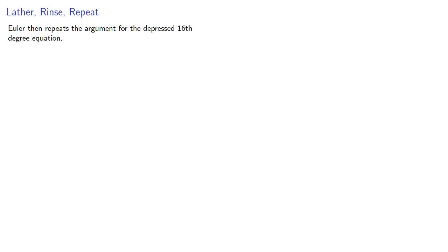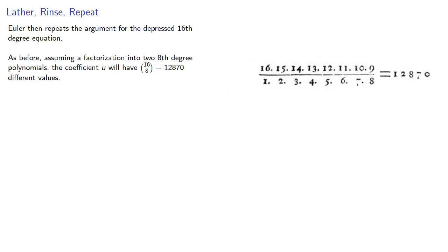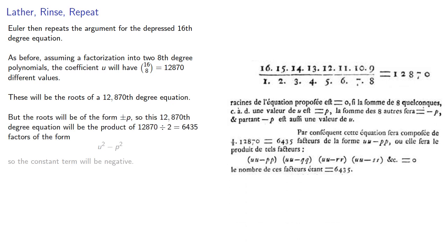Euler then repeats the argument for the depressed 16th degree equation. As before, assuming a factorization into two eighth degree polynomials, the coefficient u will have 16 choose 8, 12,870 different values. These will be the roots to a 12,870th degree equation. But the roots will be of the form plus or minus p, so this 12,870th degree equation will be the product of the corresponding factors.